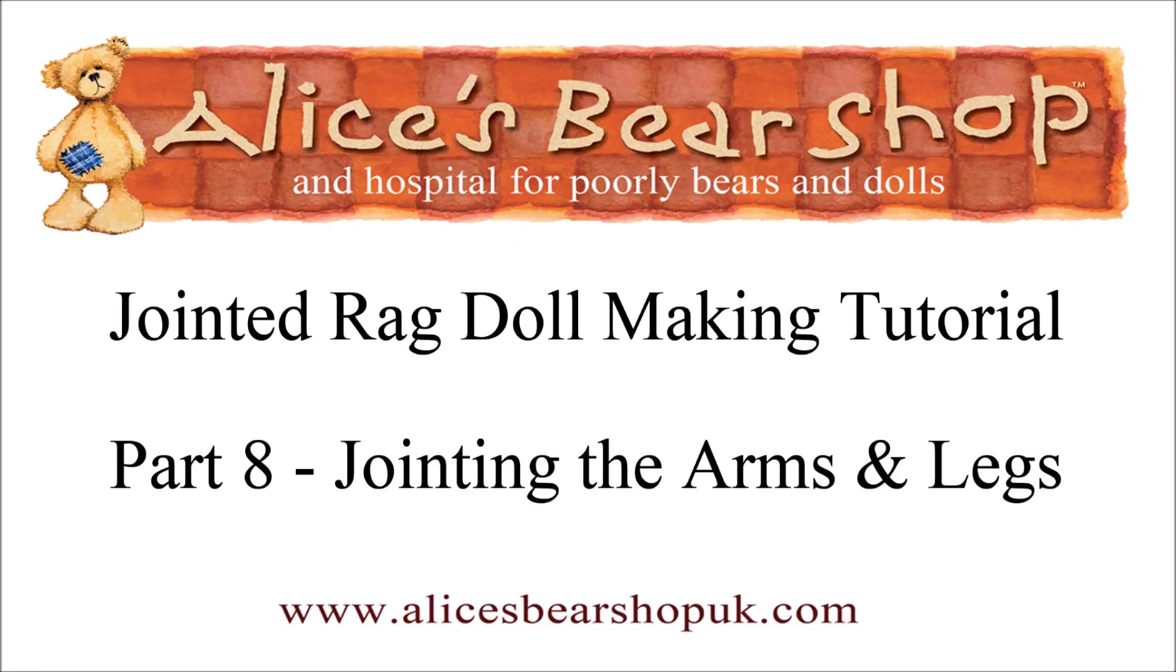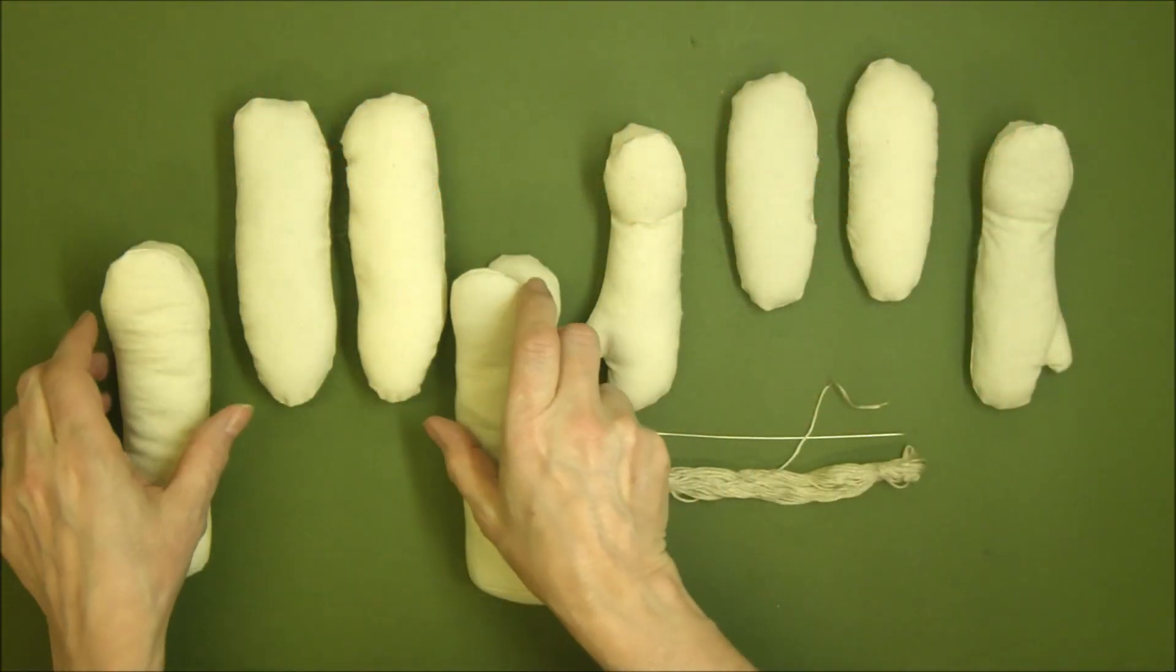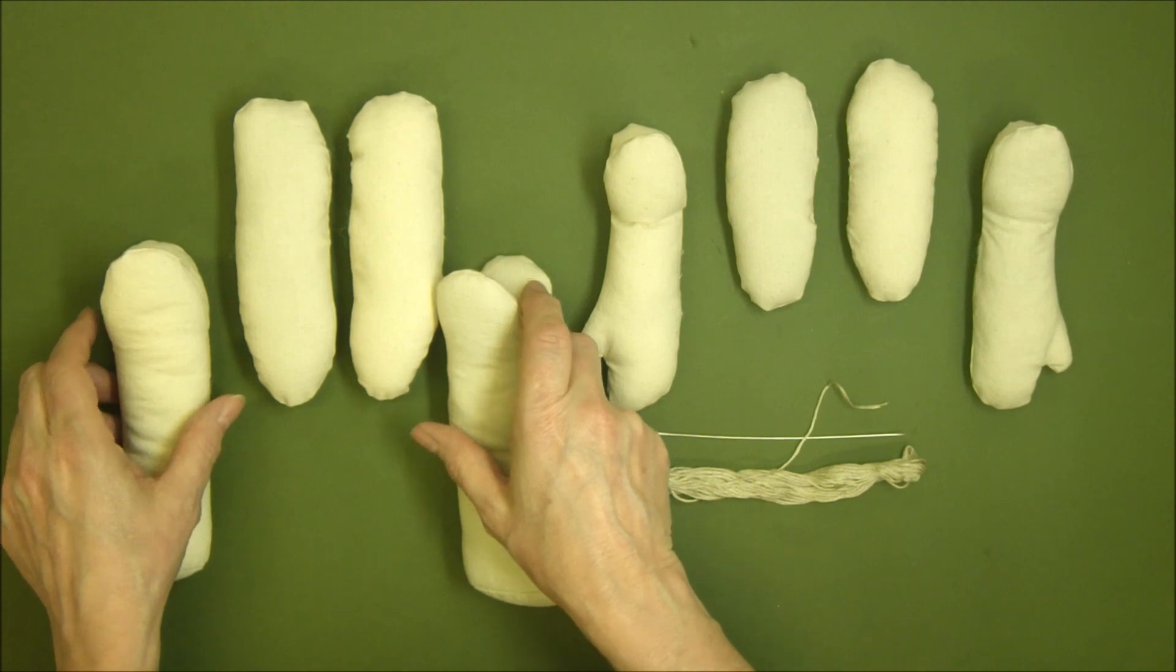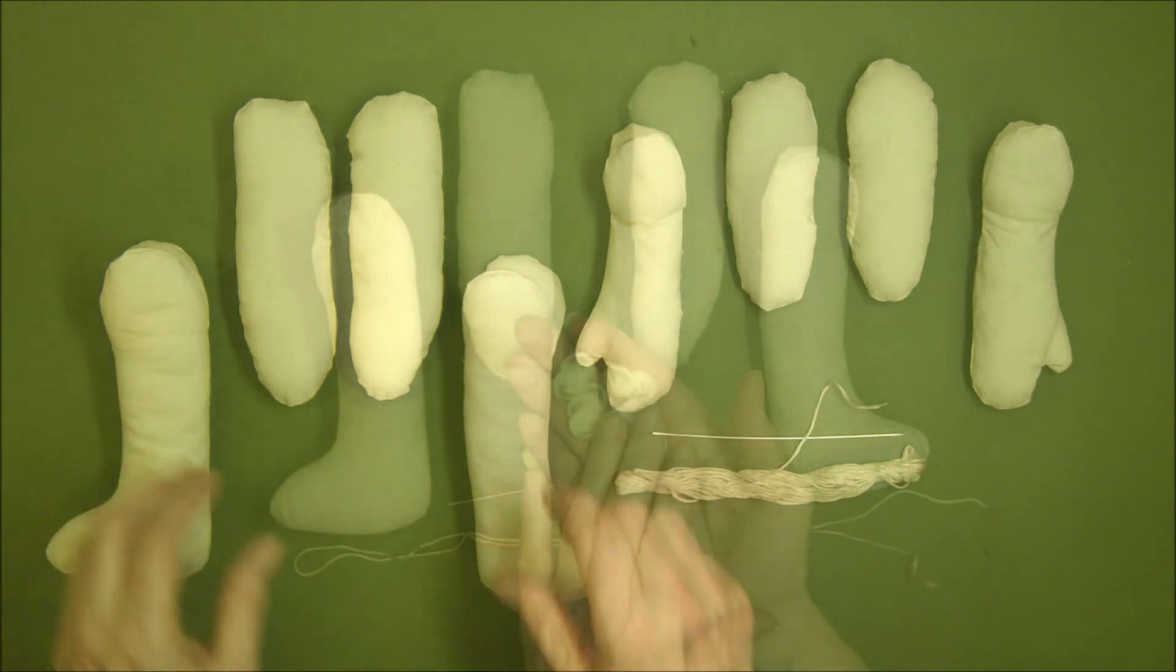Hello and welcome to this eighth tutorial video on how to make a button jointed ragdoll. We're going to look at putting together the sections of our legs and our arms by jointing the elbows and knees.